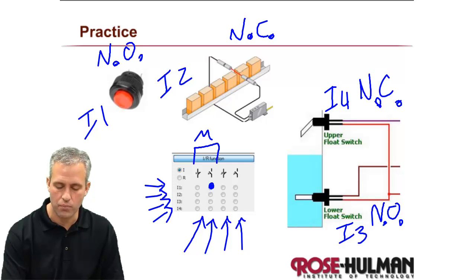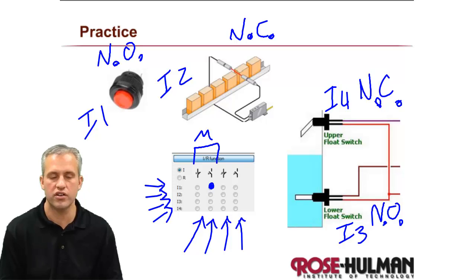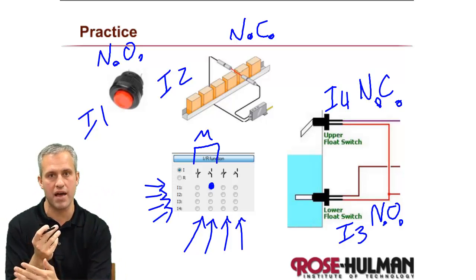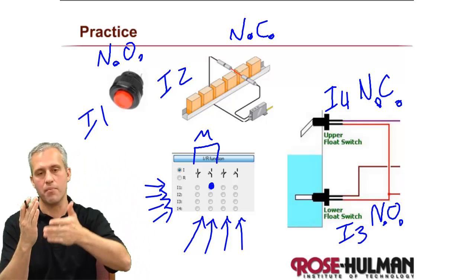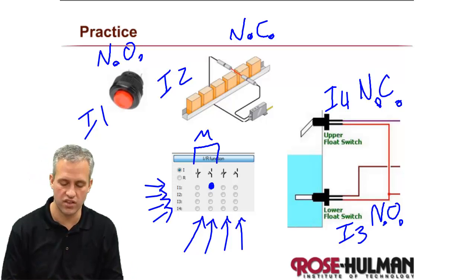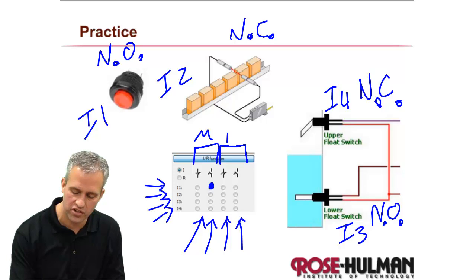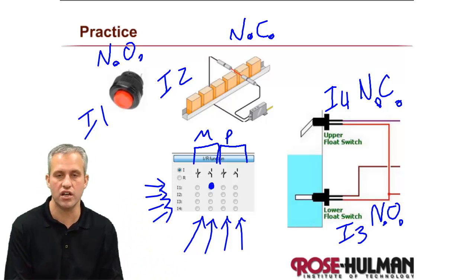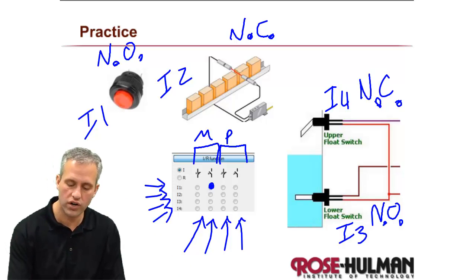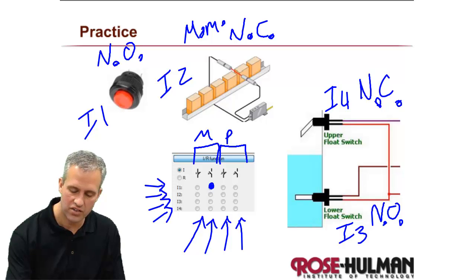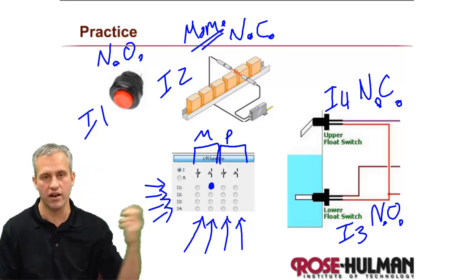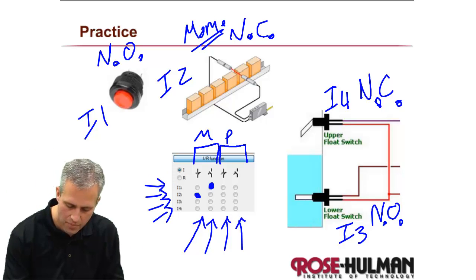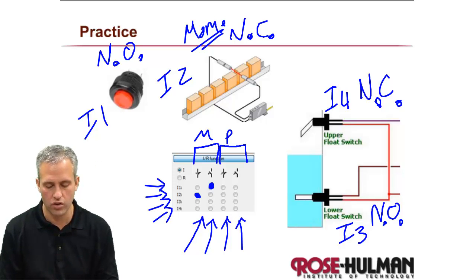The second input is a break beam — we say it's normally closed. Break beams can be thought of as momentary because the signal is fleeting: something passes and then it snaps back. Or you could think of it as position because a box sitting in front of it stays blocked. We're going to use break beams as momentaries in our system because objects on the conveyor are always a momentary thing. So I2 is going to be normally closed momentary — the first column.